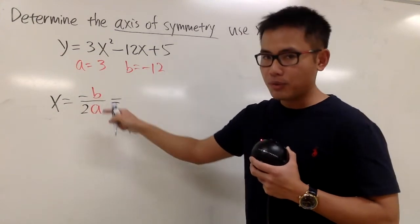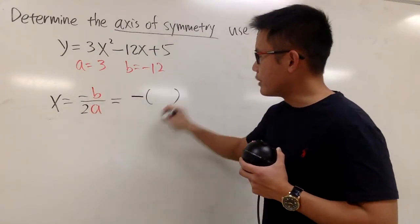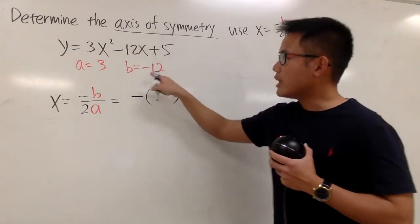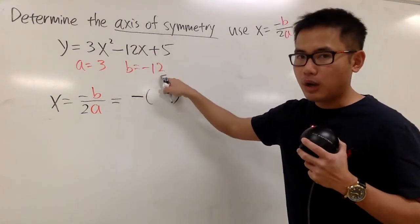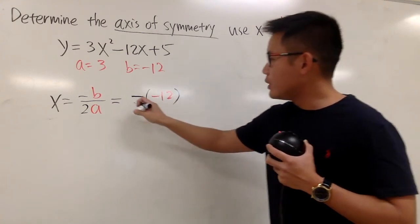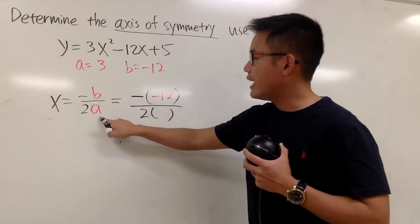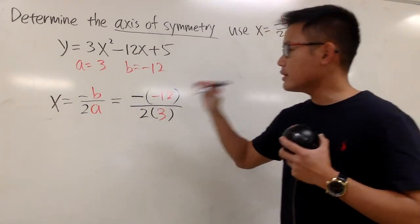This negative is from the formula, so we have this negative. And then the b, let me open the parentheses. We know from the equation, b is equal to negative 12. So put in negative 12 right here. And then we divide it by 2 times the a, which is 3. So this is what we have.